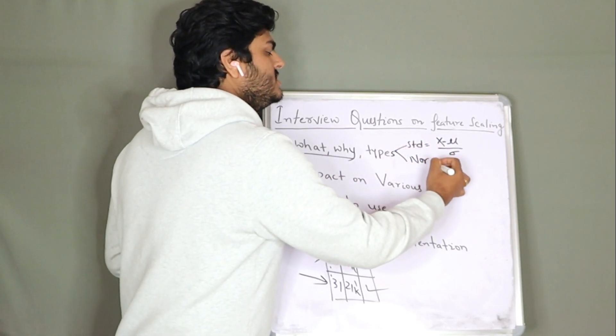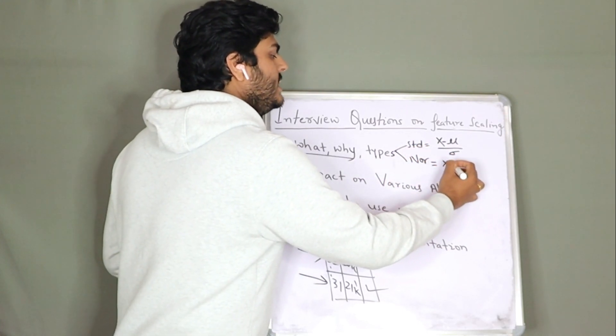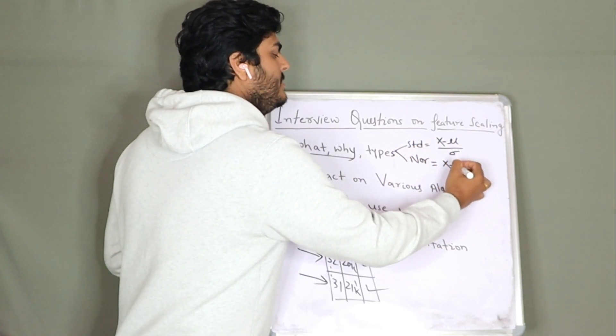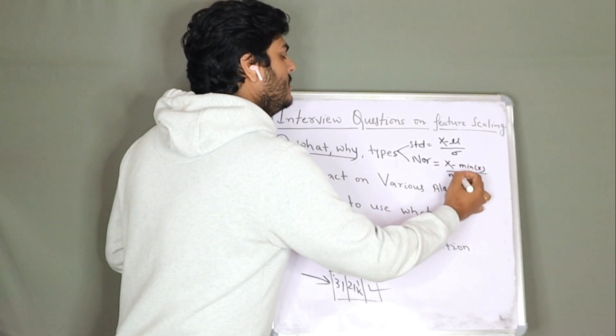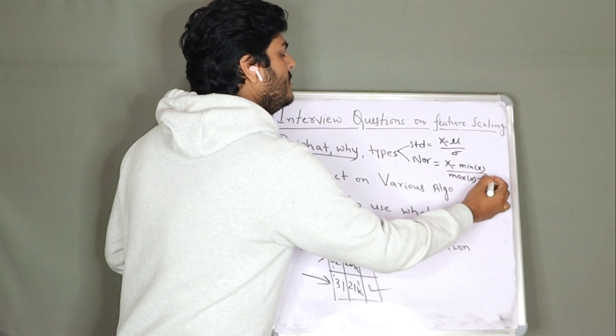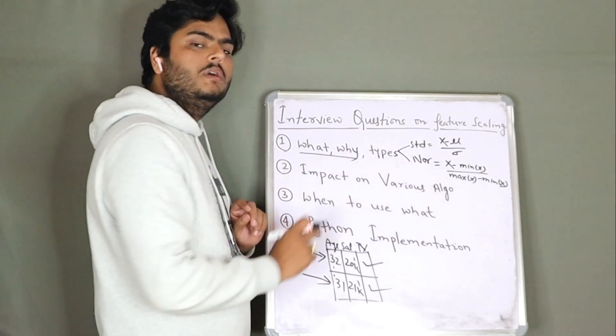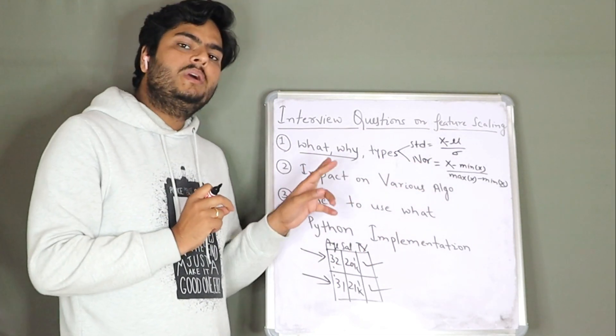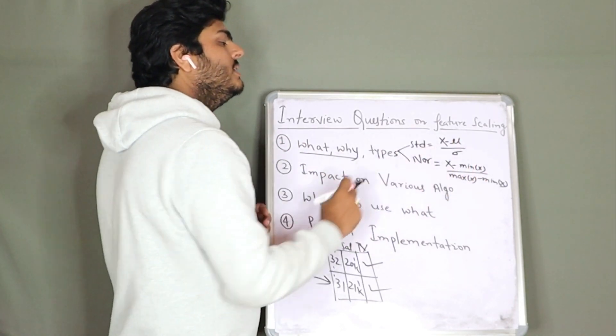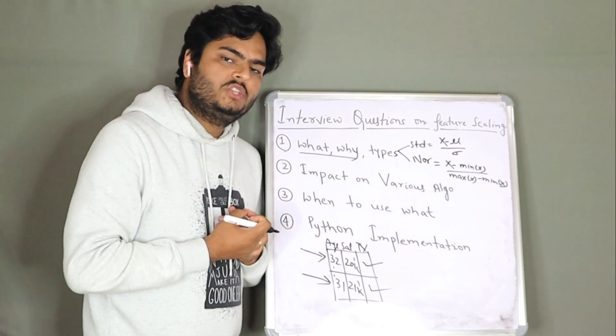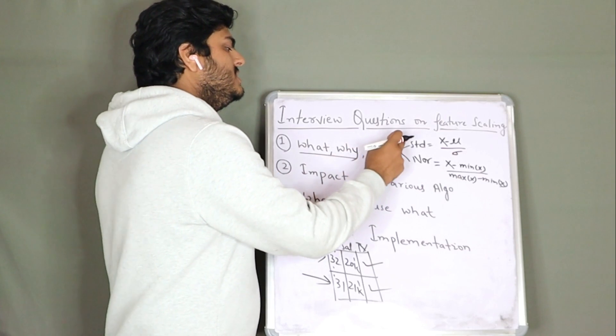All your observations will be transformed like this if you do a standardization. If you do a normalization, there are two types of normalization. One is x minus minimum of x divided by maximum of x minus minimum of x. This is called your min max scaling.